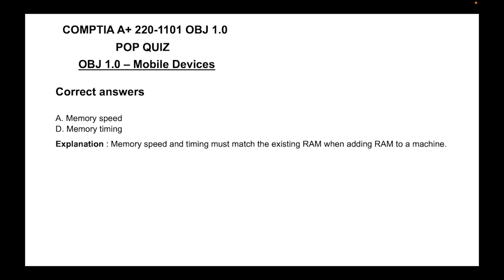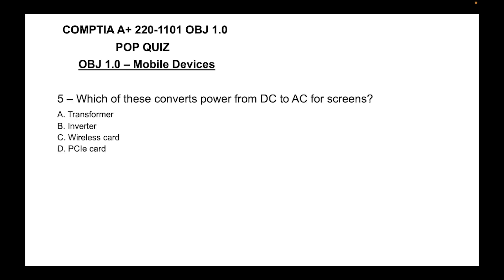The correct answers are A, memory speed, and D, memory timing. Memory speed and timing must match the existing RAM when adding RAM to a machine. Question five: Which of these converts power from DC to AC for screens? Is it A) transformer, B) inverter, C) wireless card, or D) PCIe card?